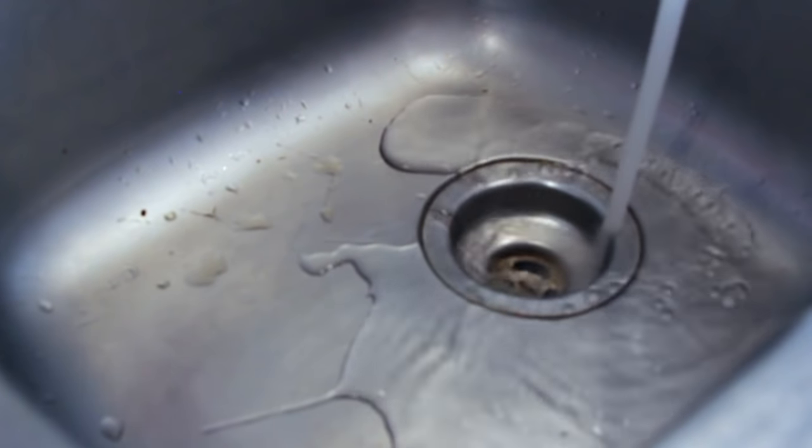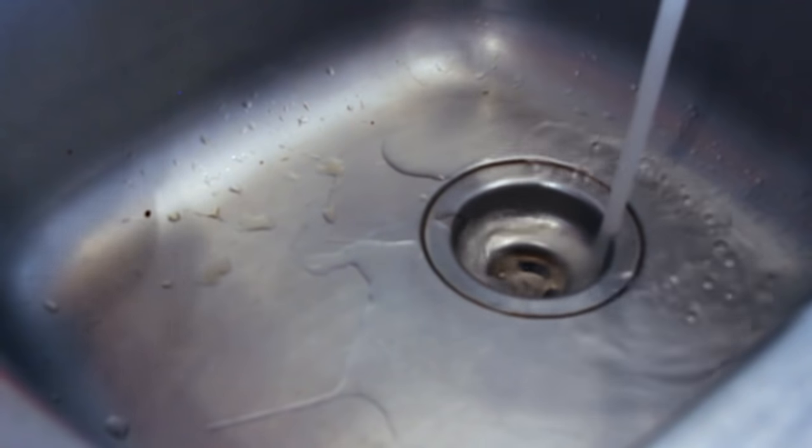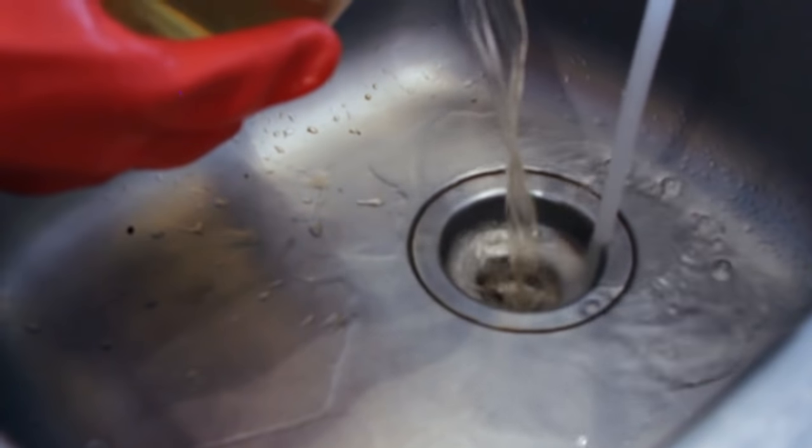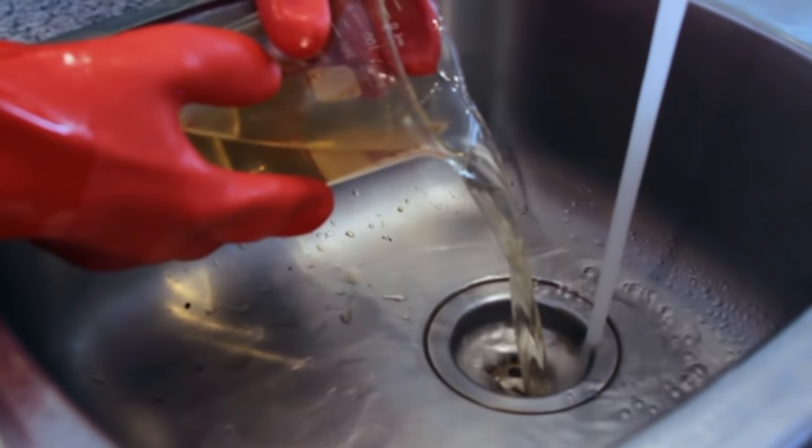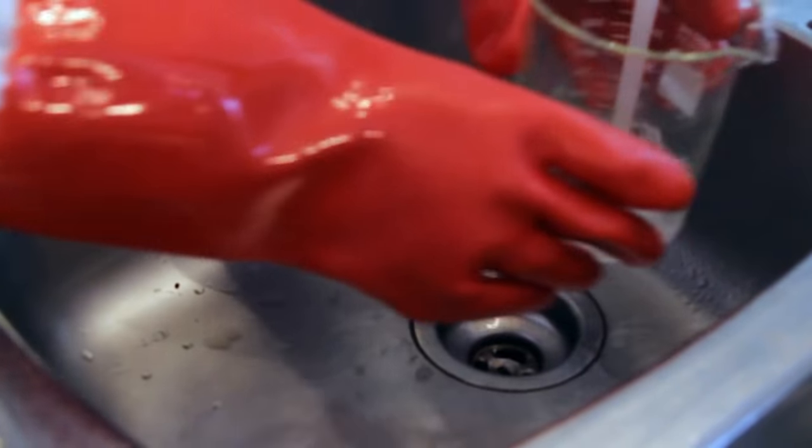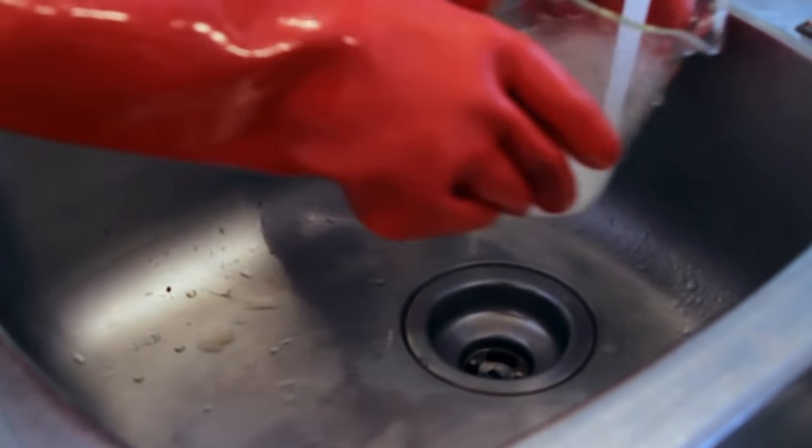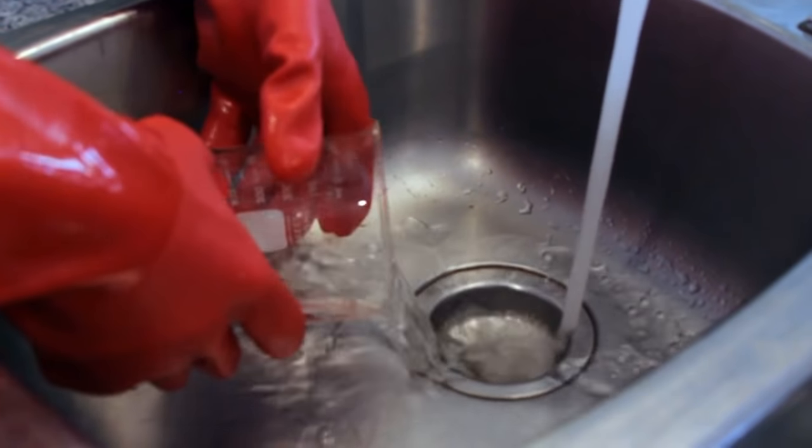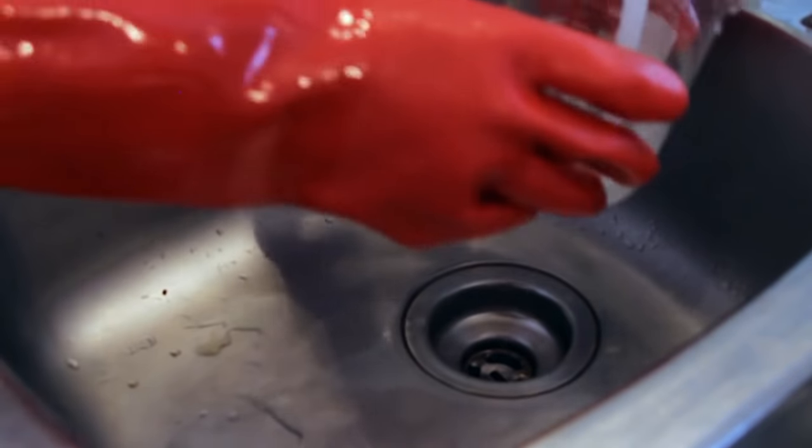Turn your water on in your sink, and let it run for a few seconds. Then, pour your solution directly down the drain of the sink. Wash your container out, and pour that as well down the drain. Let your water run for a few more seconds to make sure that our entire solution is thoroughly washed down the drain.